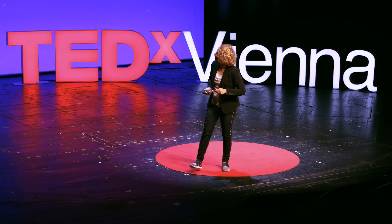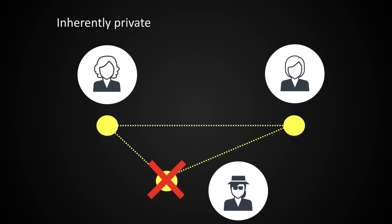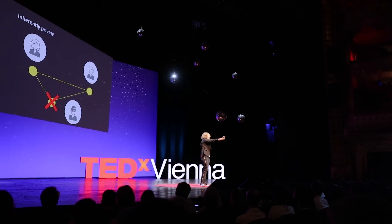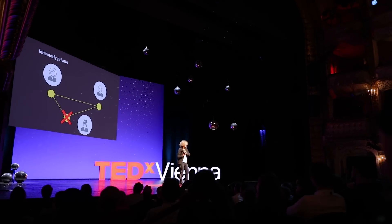It is this feature that makes entanglement naturally suited for tasks that require coordination or synchronization. The second feature of quantum entanglement is that it is inherently private. If I have two qubits that are completely entangled with each other, then it is physically impossible for any other qubit — or anything else in the universe — to have any share of this entanglement. This means our two entangled qubits form a private connection that no one else can share. It is this feature that makes entanglement naturally suited for secure communication.